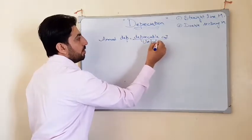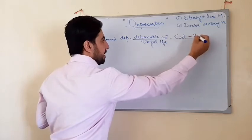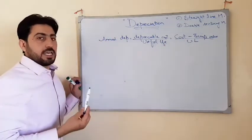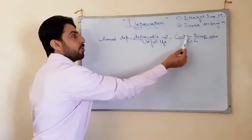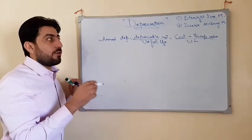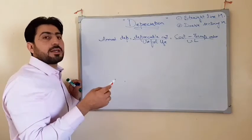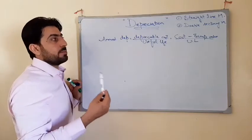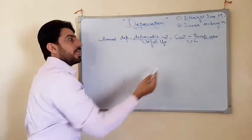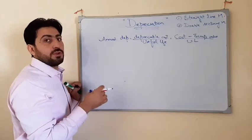The straight line depreciation formula is: depreciable cost divided by useful life. The depreciable cost is the original cost minus the scrap value. The original cost is the acquisition cost at which we acquired the asset, and the scrap value is the final value of an asset at the end of its economic life. Divided by useful life, which is the estimated service life through which an asset can be useful.